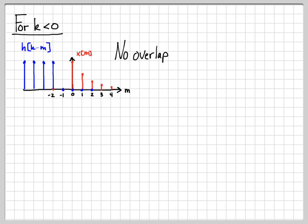So right here, I can see I don't have any overlap. If I was to multiply x[m] times h[k-m] for this particular value, they don't have any non-zero overlap. Every time I multiply them at each point in time, one of them is 0. For instance, at time 1, h[k-m] is 0. At time minus 2, x[m] is 0. There's never a point in time where both of them are non-zero.